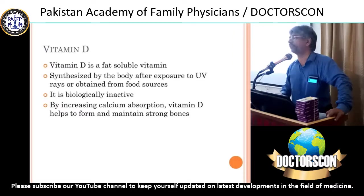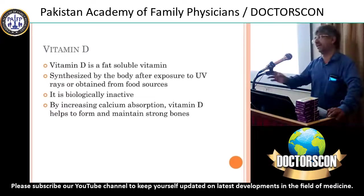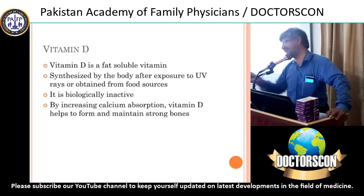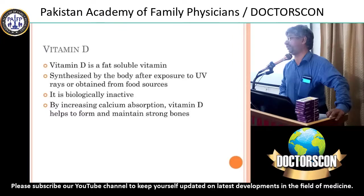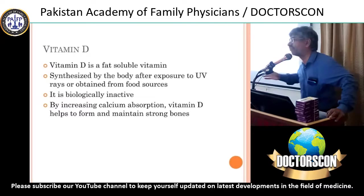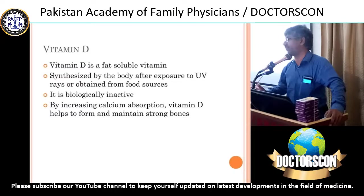Secondly, you asked about herpes zoster. As Dr. Saab is an infectious disease specialist — herpes zoster, again, the lesions are totally different; it is just like comparing an elephant with an ant. The lesions in herpes zoster are basically dermatomal in distribution, the majority of the time. The most common dermatomal distributions are the trunk — truncal lesions — or the ophthalmic division of the trigeminal nerve. In monkeypox, the lesions are widespread and do not basically comply with a dermatome.